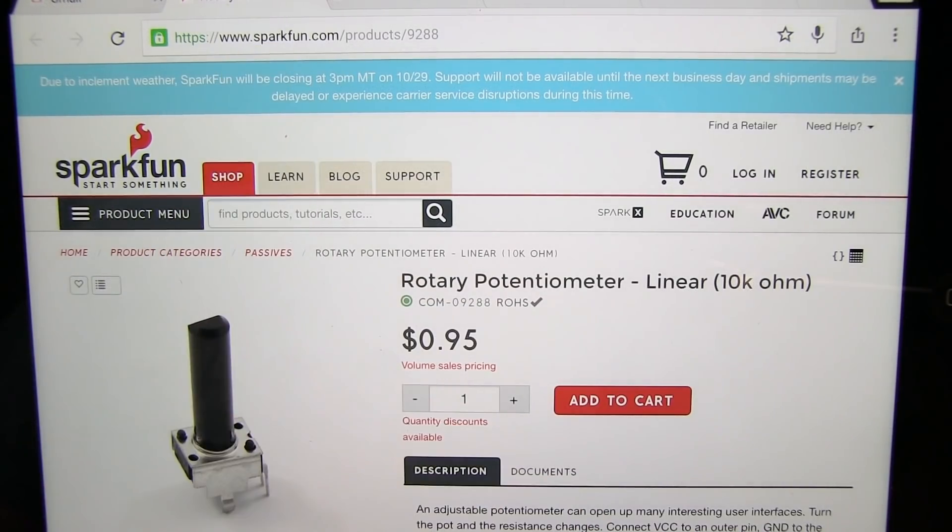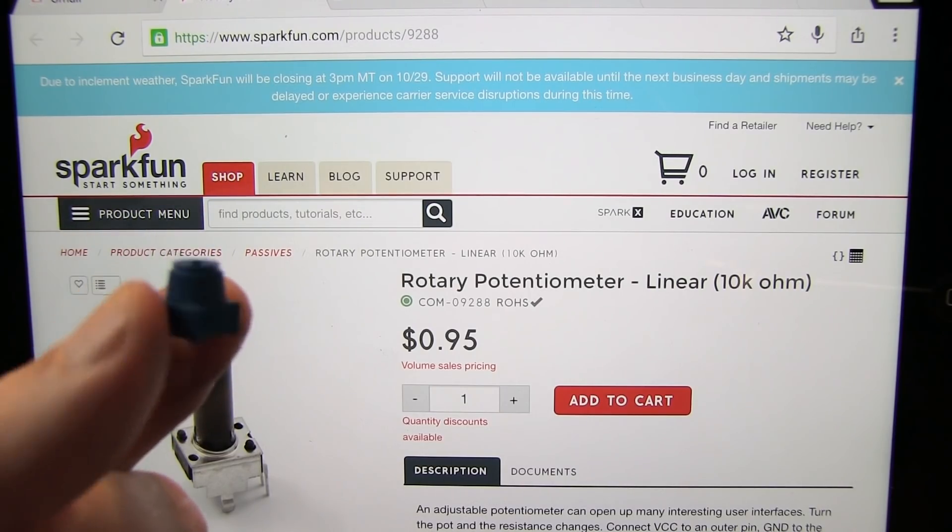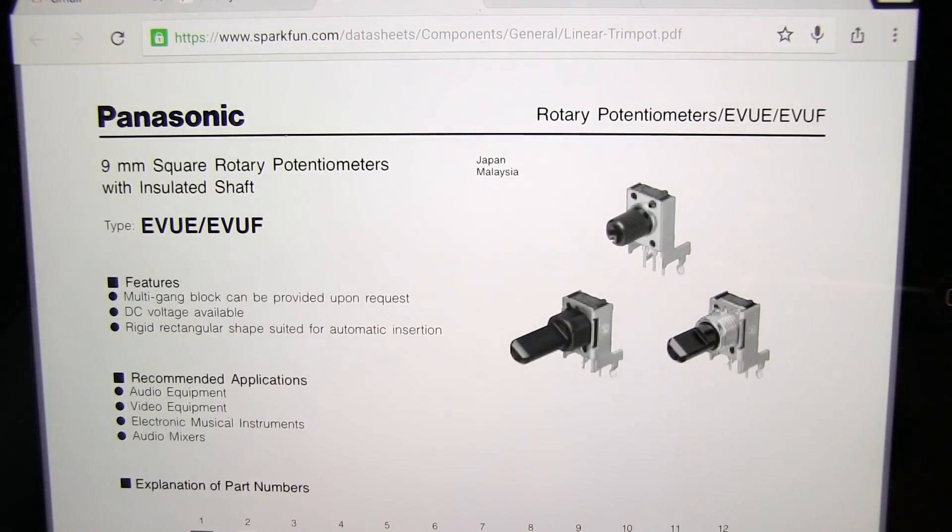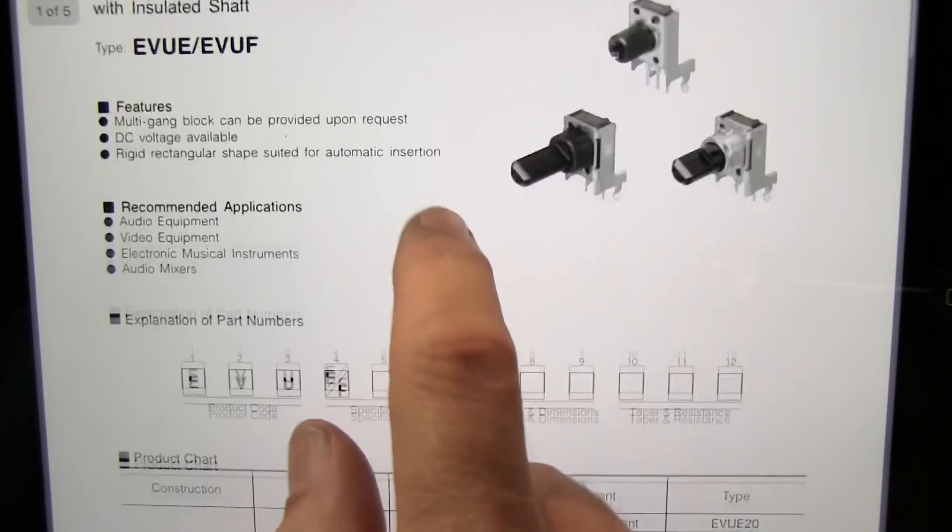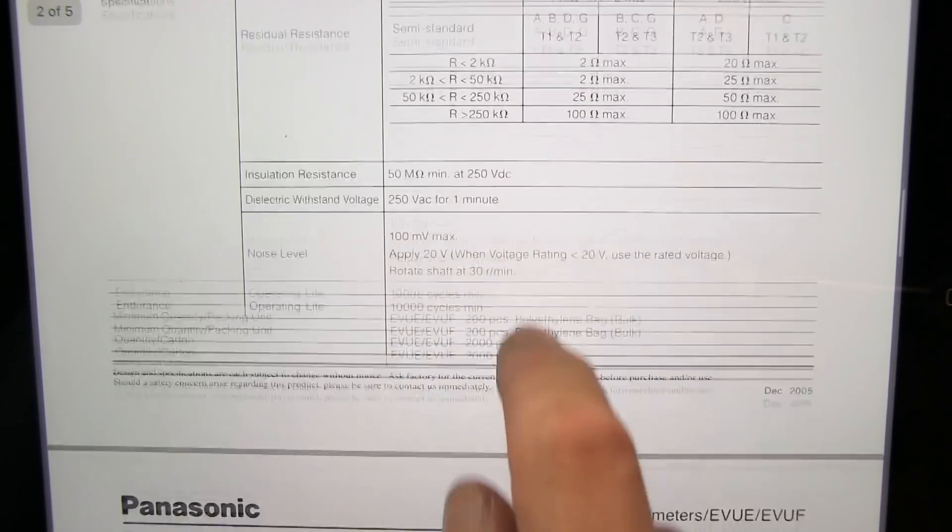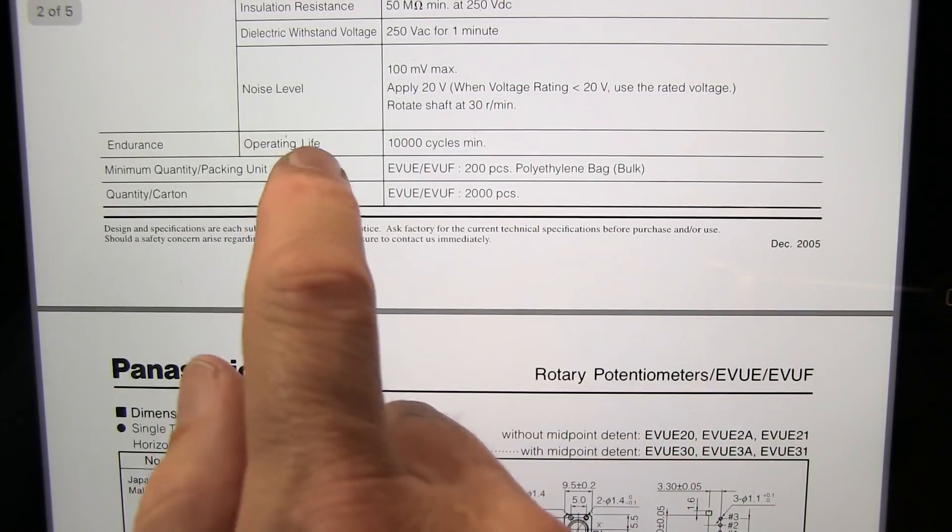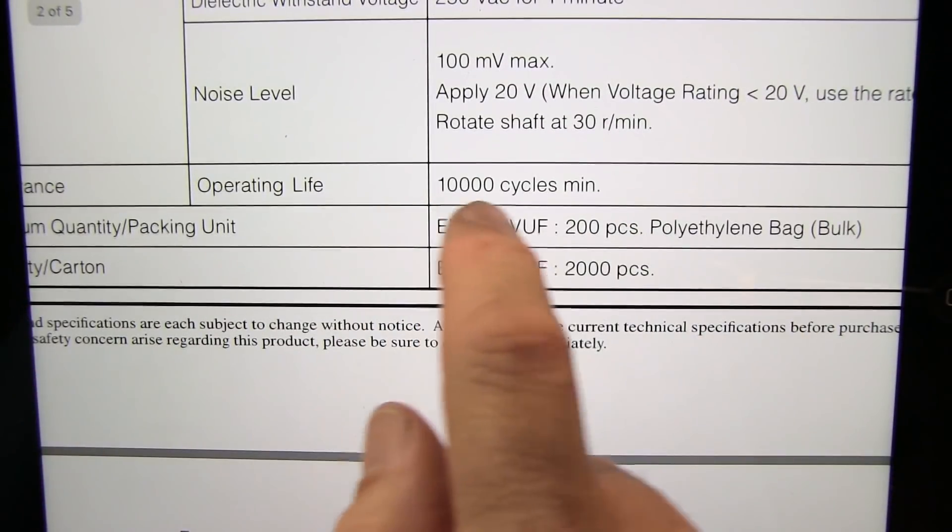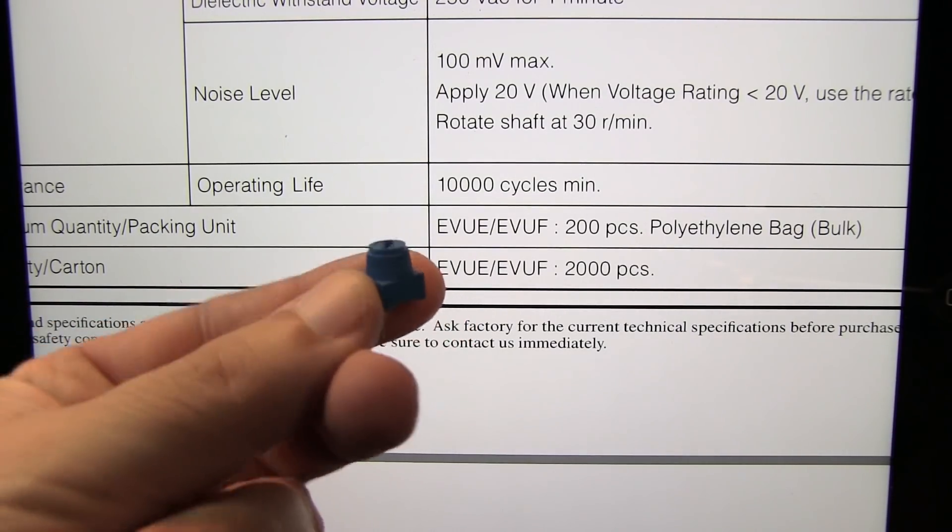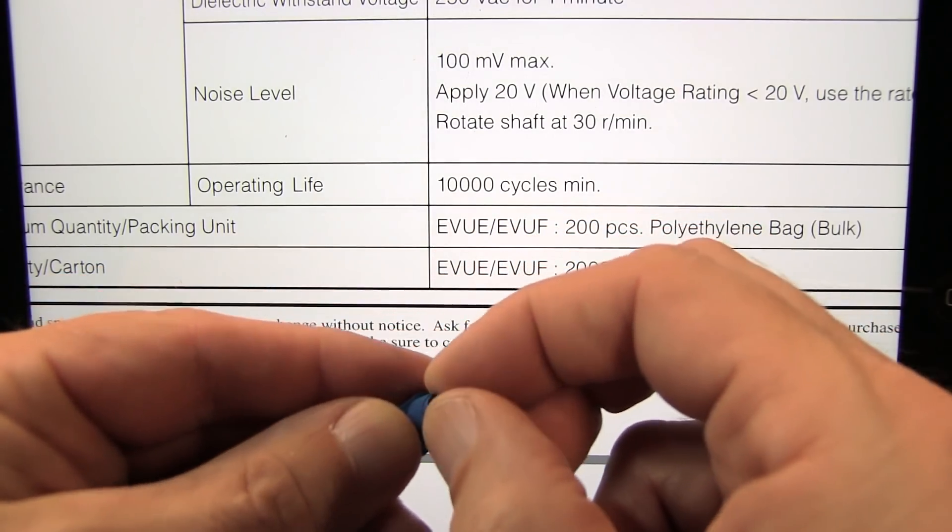Now here's an example of another device, again offered by SparkFun, that would be a better choice for a proto-board-friendly control over this trim pot with a knob. If we take a look at the datasheet for this guy here, we'll see that this guy is indeed designed to be an actual control. If we scroll down to the endurance operating life, we'll take a look at that. It's rated for 10,000 cycles. So clearly a lot more than the 200 cycles of this trimmer with a knob.